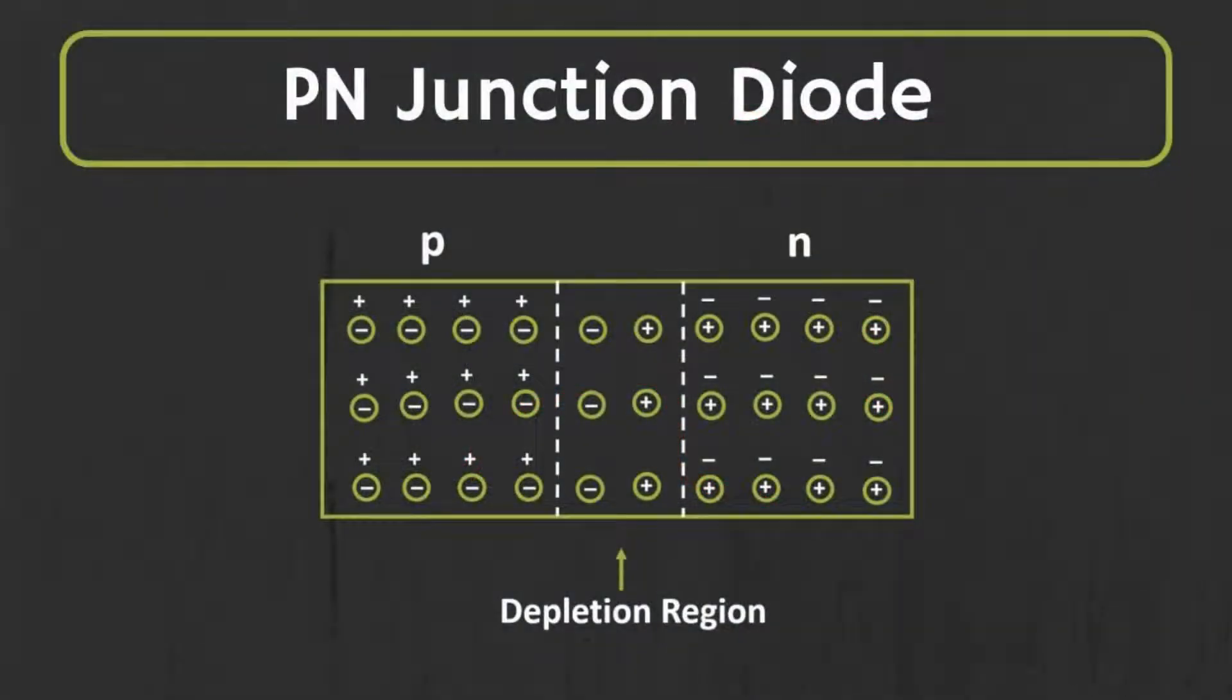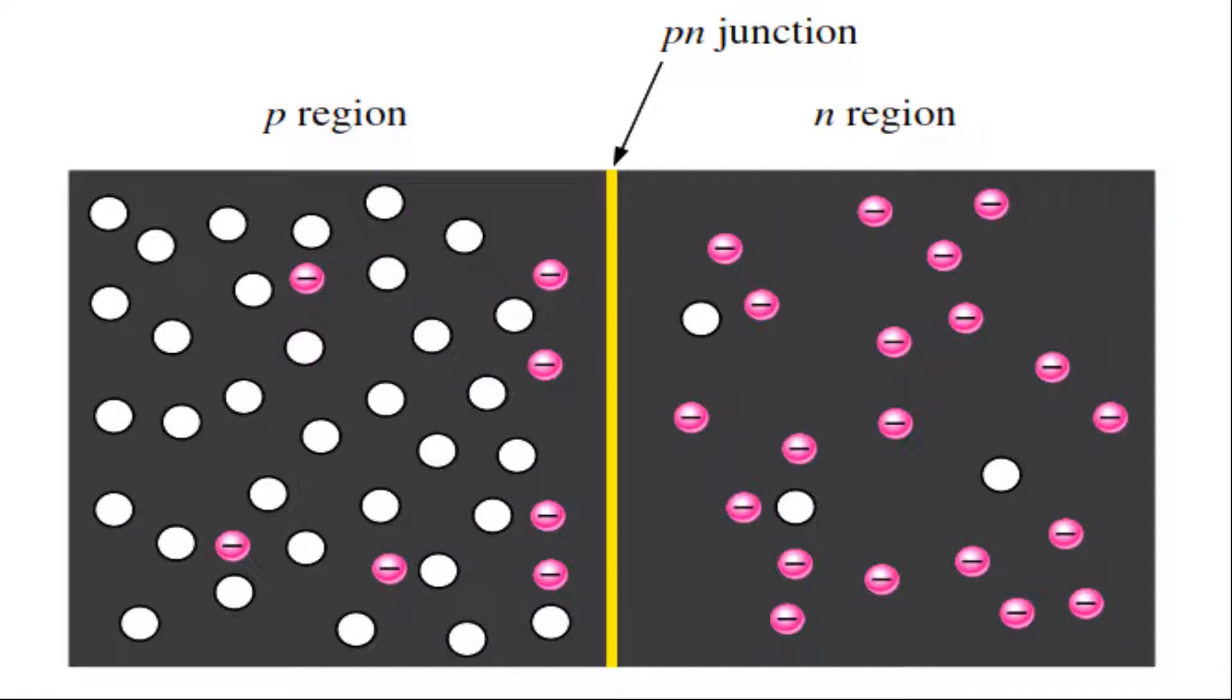The diodes are normally known as P-N junction diodes. Why are they called the P-N junction? Let's have a look. A P-N junction is an interface or a boundary between two semiconductor material types namely the P-type and the N-type.